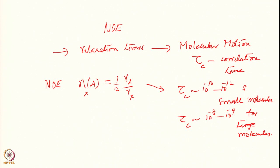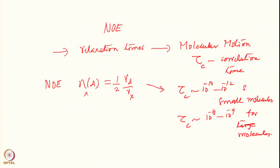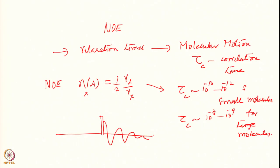This is the steady-state NOE. The experiment is done in this manner: I have a FID collected here, I do a pre-saturation perturbation on a particular spin A, and I monitor spin X. When I perturb spin A, I monitor the intensity of X with and without the perturbation, take the ratio, and get the NOE. By calculations, one can show this is proportional to half γA over γX.